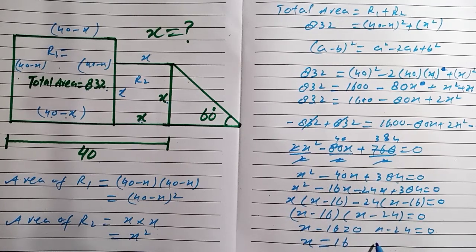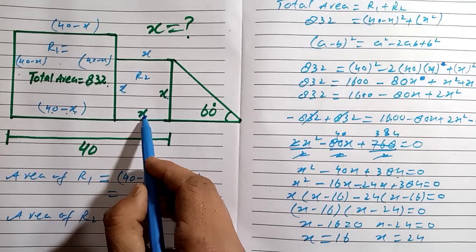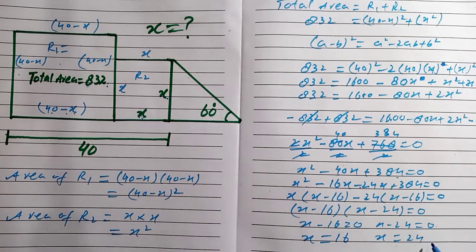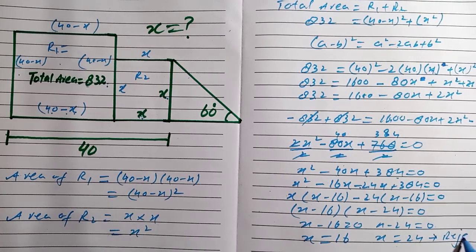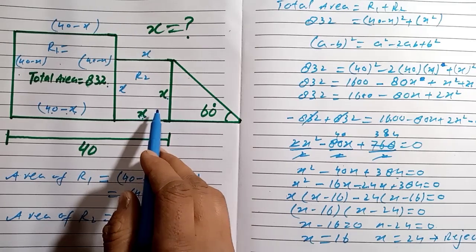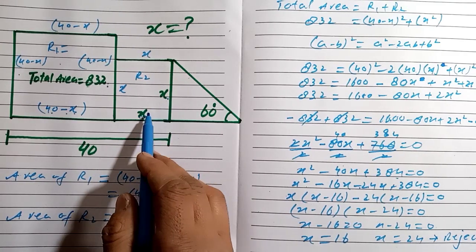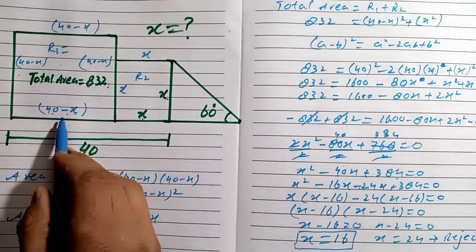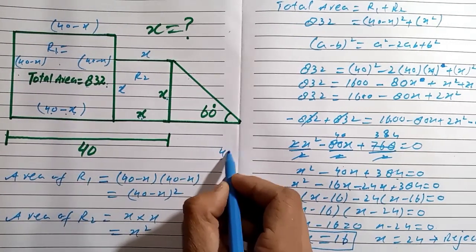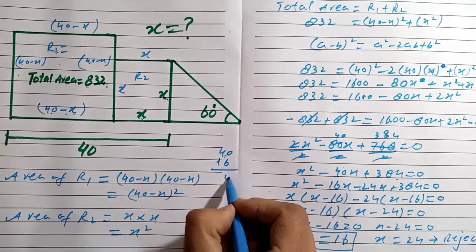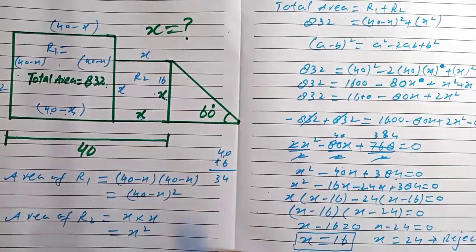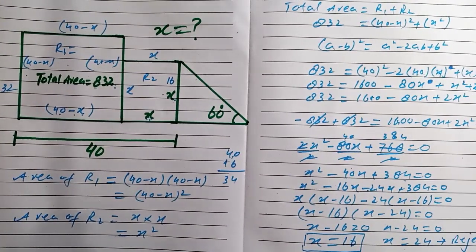The two values of x are 16 and 24. Since x is the side of the smaller square, we reject the larger value of 24. So our final answer is x equals 16. The larger square's side is 40 minus 16 equals 24. So the smaller square has side 16 and the larger square has side 24.